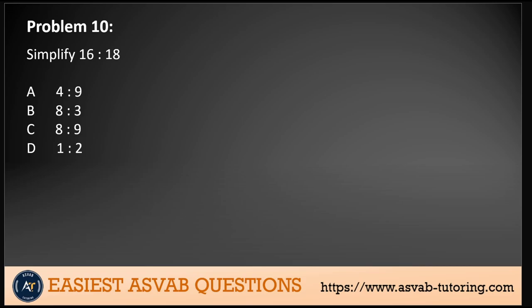Problem 10: Simplify 16 to 18. So 16:18 is a ratio. We can look at it as a fraction to make it easier. If we simplify it down, we get 8/9, or 8:9. That's our answer.